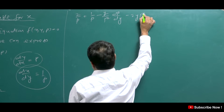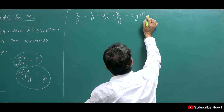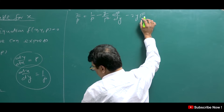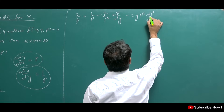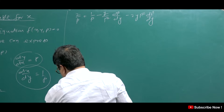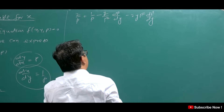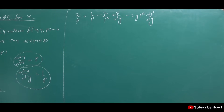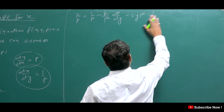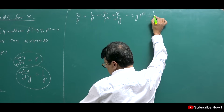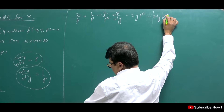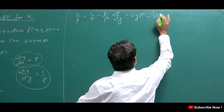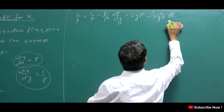Minus 2Y/P², then DP/DY. Then what do we have? 2Y times P squared times DP/DY. So the equation becomes: Y² times P times DP/DY.